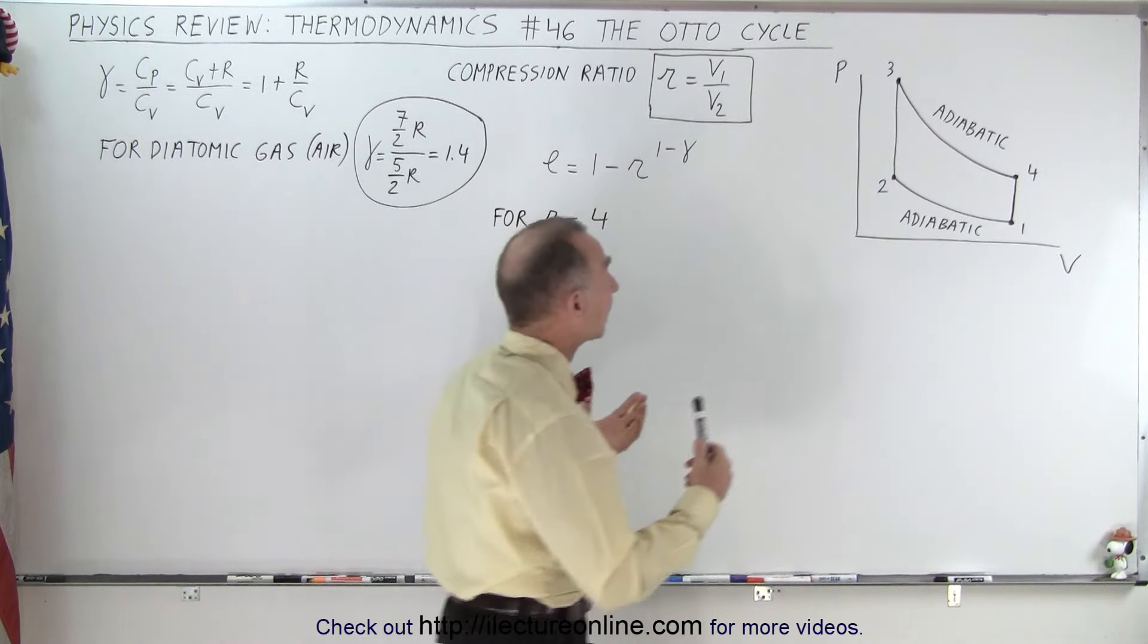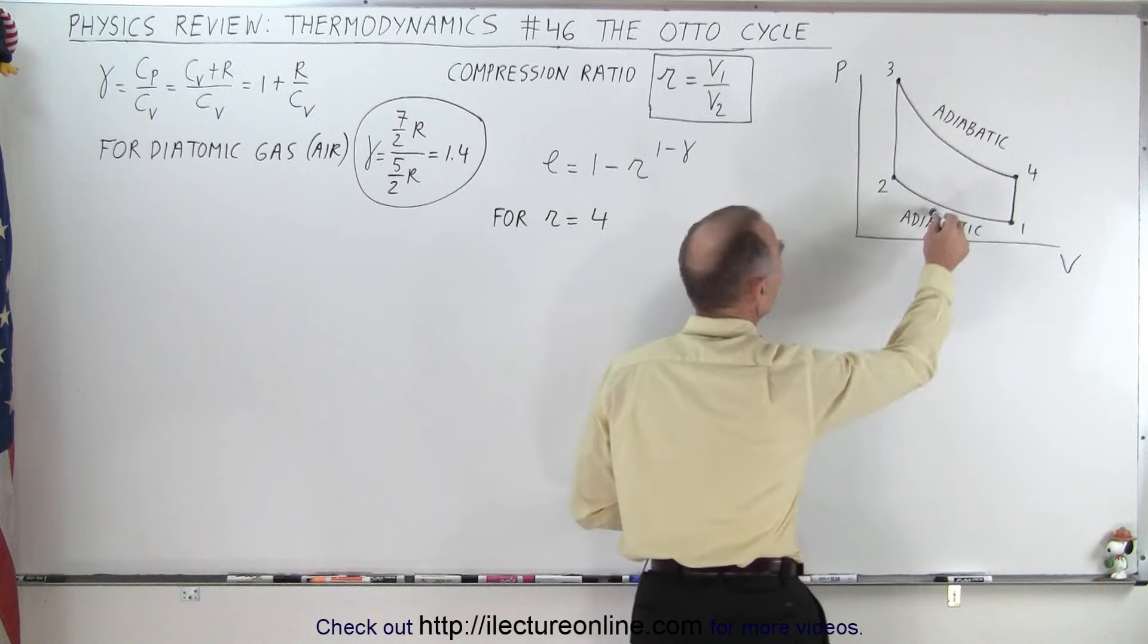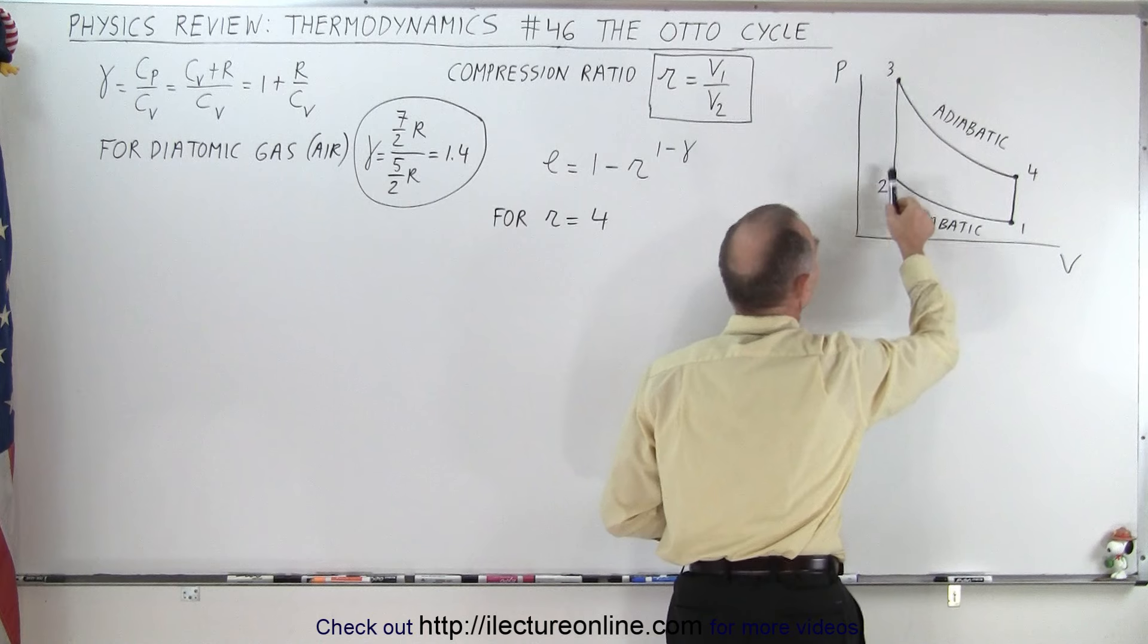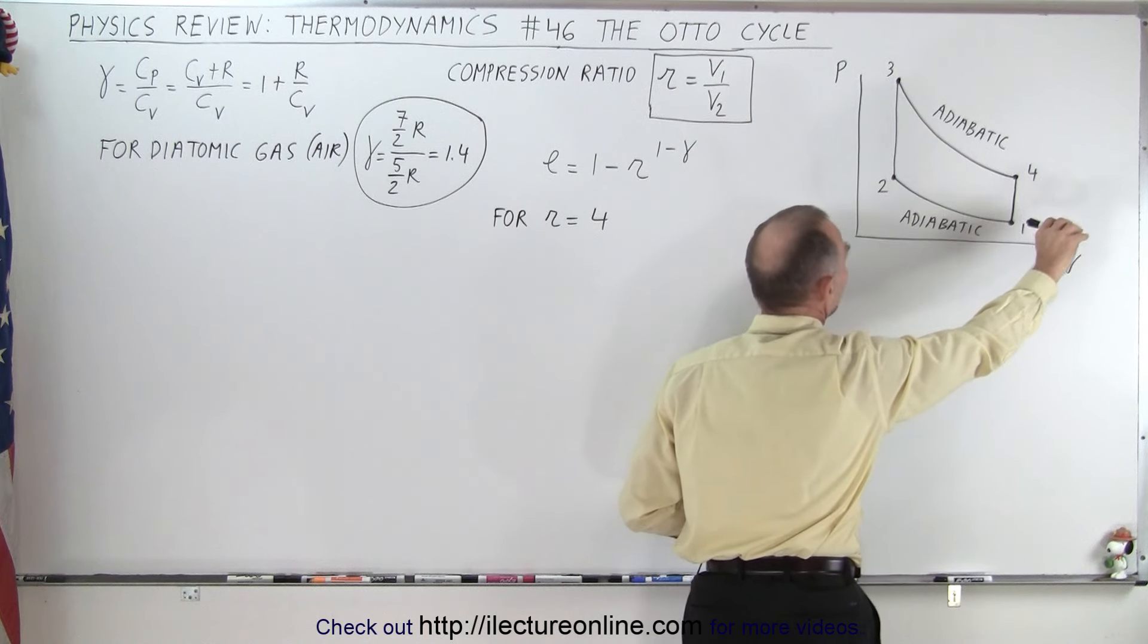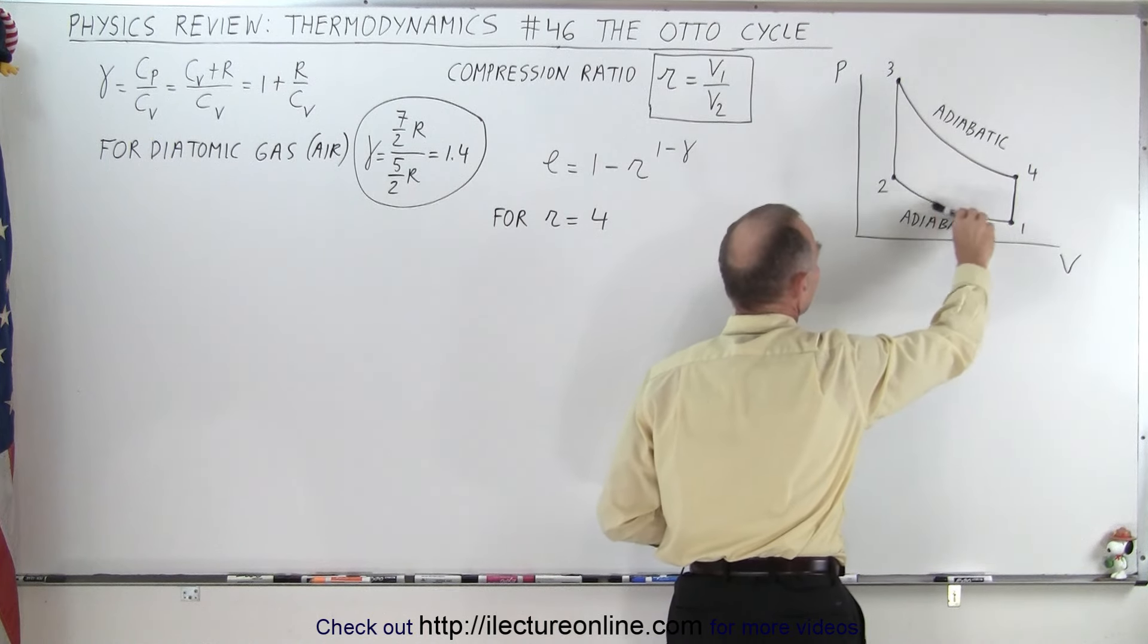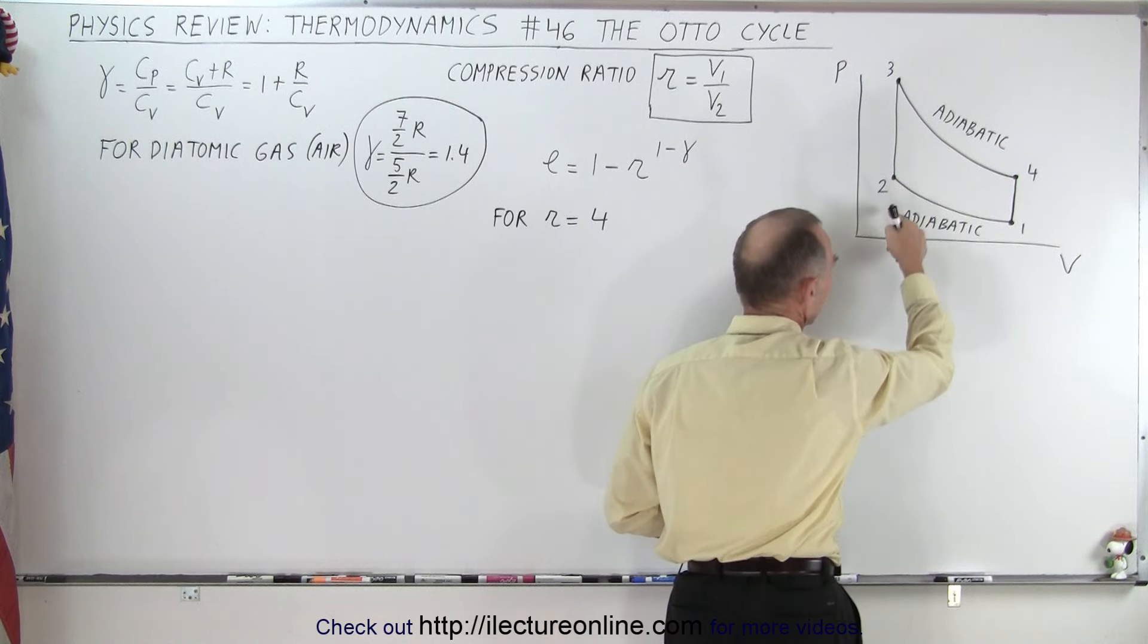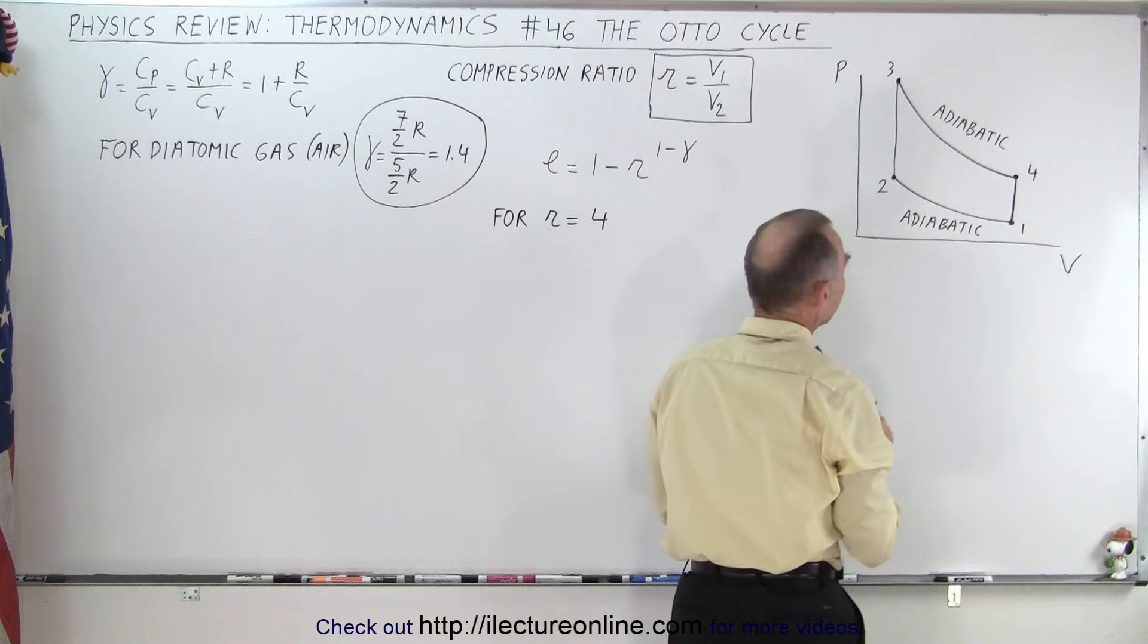Notice that the Otto cycle consists of two adiabatic processes and two isovolumetric processes. This here is the hot cycle, so what happens here is that the air gets compressed in the piston. We go from volume one to volume two, so volume two of course is much smaller volume than volume one.